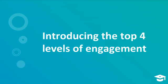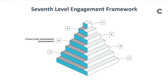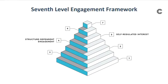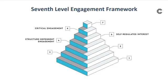Introducing the top four levels of engagement. Now that you're familiar with the lower levels of Amanda Slavin's 7th Level Engagement Framework, let's talk through the top four levels: level four, structure-dependent engagement; level five, self-regulated interest; level six, critical engagement; and finally, the top level, level seven, literate thinking.